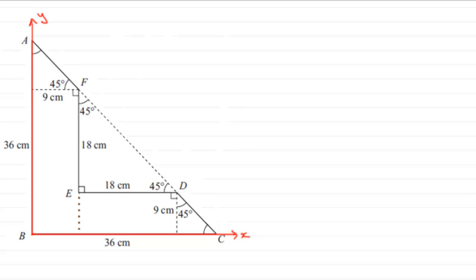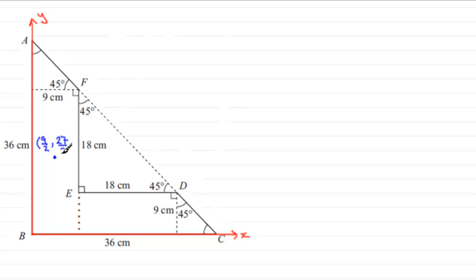We want to locate the center of mass of the various shapes. For this rectangle, the center of mass is in the middle. The x-coordinate is half of 9 units in from edge AB, so nine over two. For the y-coordinate, we have 9 plus 18 centimetres giving 27 centimetres total, so divided by 2 that's 27 over 2.